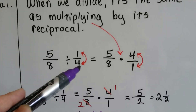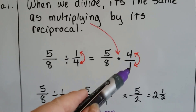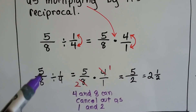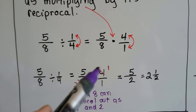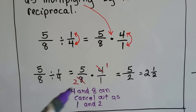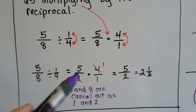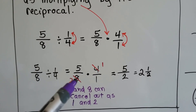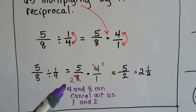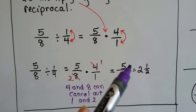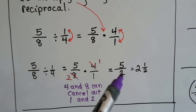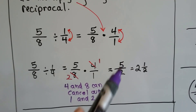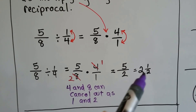5 eighths divided by 1 fourth — we flip this around and it becomes 4 over 1, and now we're multiplying instead of dividing. So 5 eighths divided by 1 fourth becomes 5 eighths times 4 over 1. The 4 and the 8 can cancel out as a 1 and a 2 — there's one 4 here and two 4s here and they cancel each other out crossways. Then we multiply across: 5 times 1 is 5, and 2 times 1 is 2. We get 5 over 2, which reduced to its lowest terms is 2 and a half.